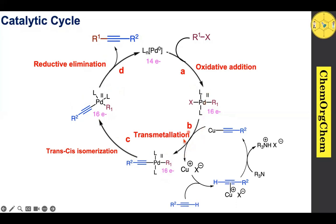In this catalytic cycle, the transmetalation step is the slowest step — that is the rate-determining step. Interestingly, we can also carry out this reaction without copper; those reactions are called copper-free Sonogashira cross-coupling reactions.